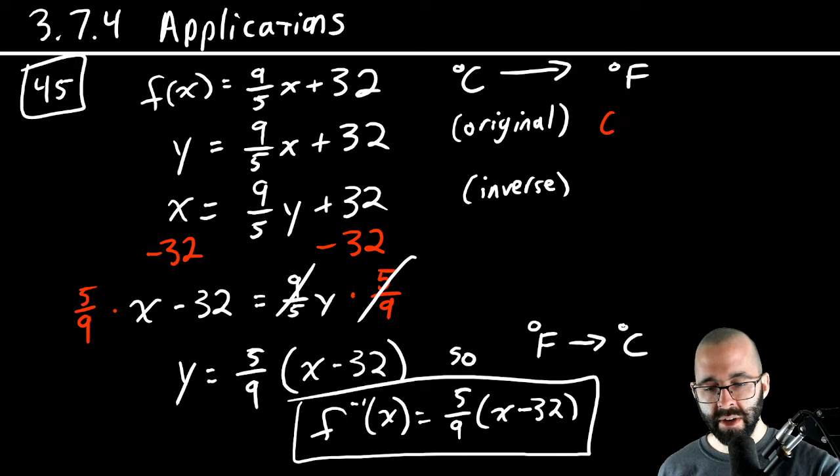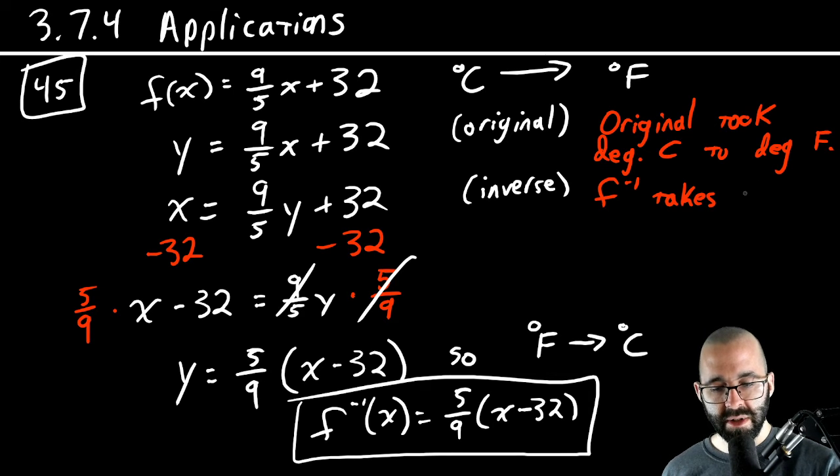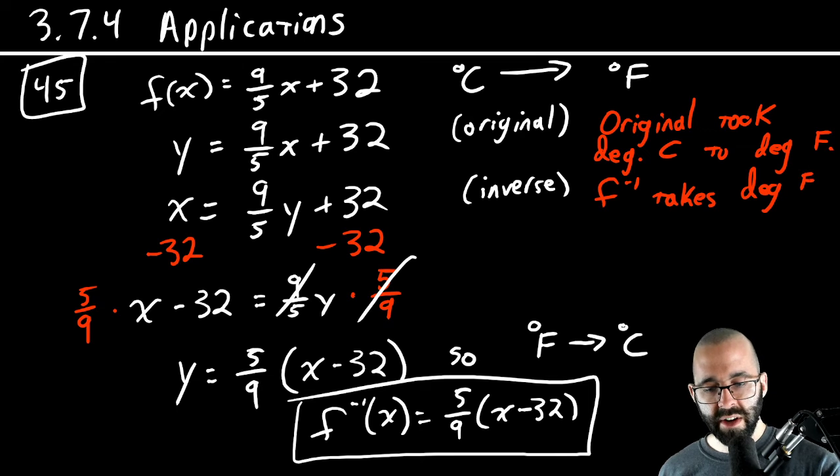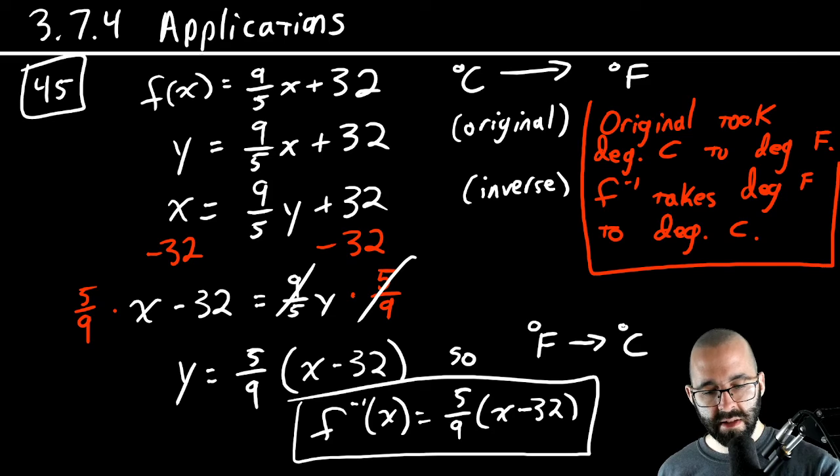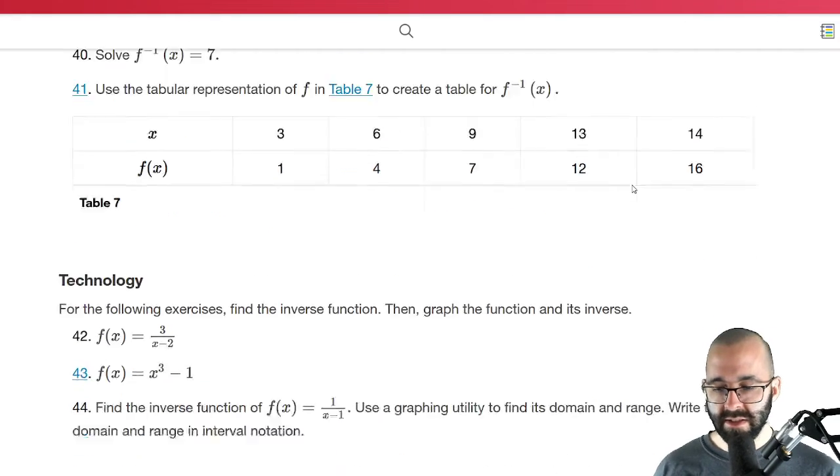Let's answer that as well. Original f took degrees Celsius to degrees Fahrenheit. F inverse does the opposite, degrees Fahrenheit to degrees Celsius. I think that's everything the question wanted us to answer.